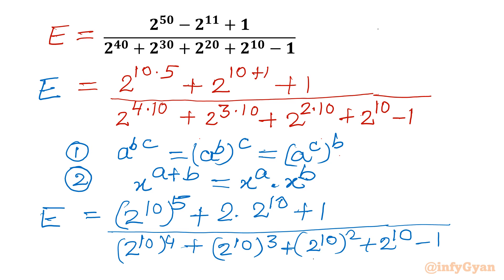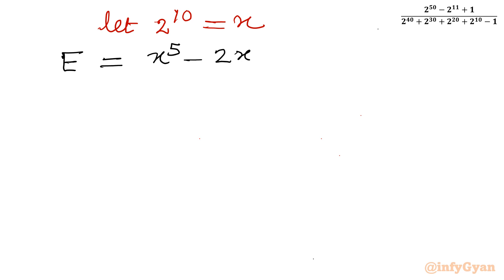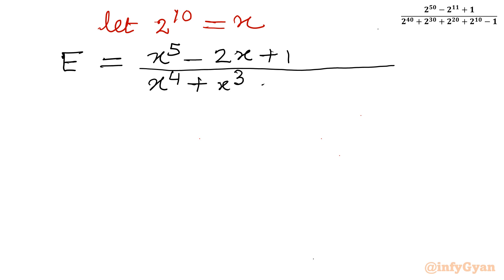Now I will use substitution. Let 2 power 10 equal x. Writing the expression in terms of x, E becomes x power 5 minus 2x plus 1, divided by x power 4 plus x cubed plus x squared plus x minus 1.